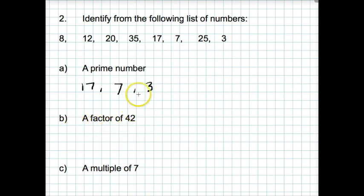Question B. Factor of 42. Factor is a number that goes exactly into that number without any remainders. 8 goes into 42 but there are remainders. 12 goes into 42, there are remainders. 20 goes into 42 with remainders. 35 will with remainders. 17 will with remainders. 7 goes into 42 though, 6 times, no remainders. So 7 is a factor of 42.